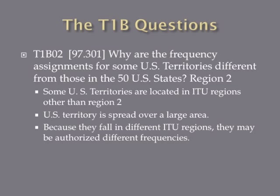Why are the frequency assignments for some U.S. territories different from those in the 50 U.S. states? The thing you need to know is that the ITU region that the continental United States falls into is ITU Region 2. The ITU ensures good order and harmony between different nations so that radio frequency allocations don't overlap or conflict. Some outlying U.S. territories — like parts in the Atlantic and parts of Alaska in the Pacific — don't fall within ITU Region 2, so the ITU assigns those areas different amateur radio frequency privileges to prevent conflict.